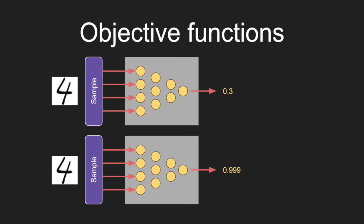This will make it a lot easier to write a program to train our network because we actually have a mathematical definition that we can program into the computer. In this example, we have a network — a gray box containing a bunch of neurons — and a sample (a purple box) that gives an input fed into the network, which then gives an output. What we want this network to do is take the pixels of an image — say a hand-drawn four, or a lion, or a monkey — and output a one when it sees a picture of a four, and output zero when it sees something that's not a four.